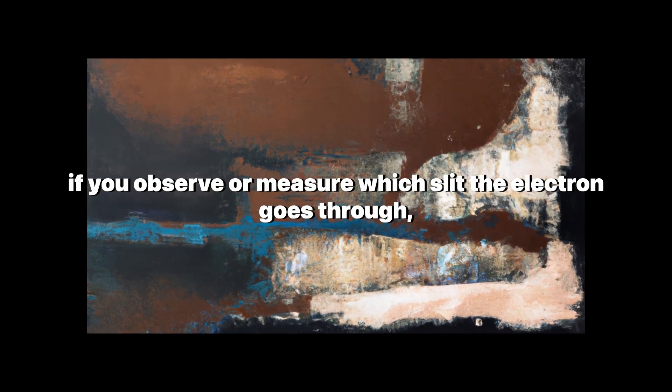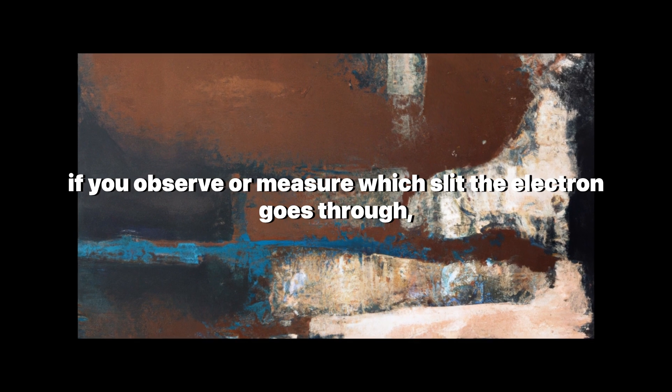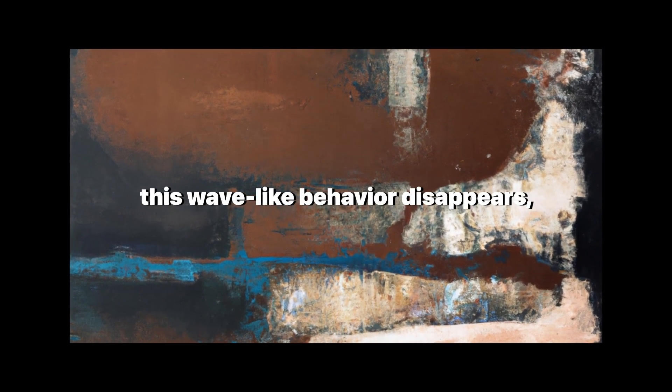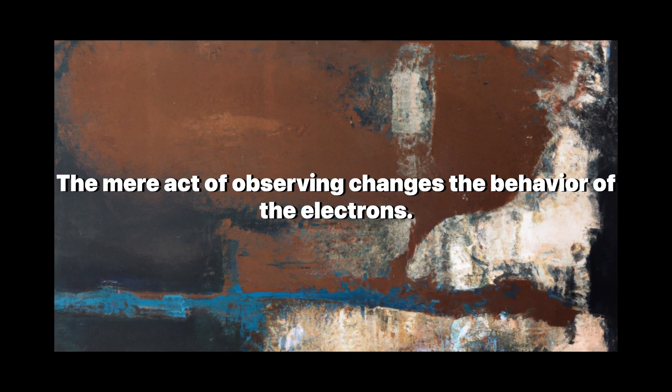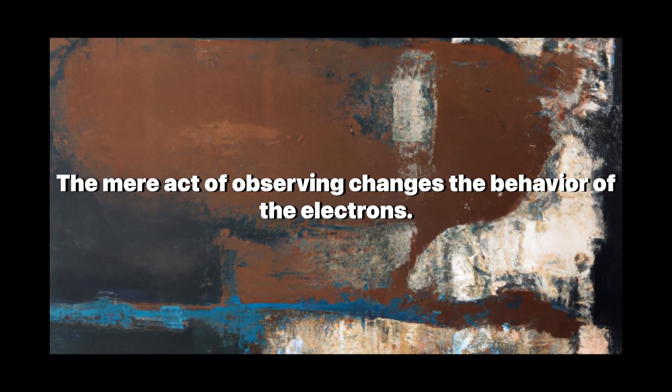However, if you observe or measure which slit the electron goes through, this wave-like behavior disappears, and they behave like particles. The mere act of observing changes the behavior of the electrons.